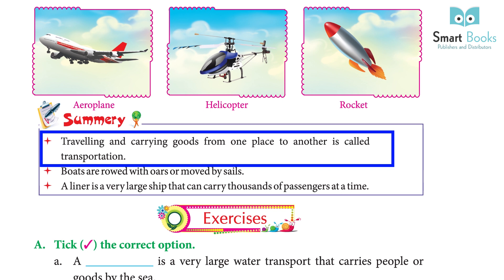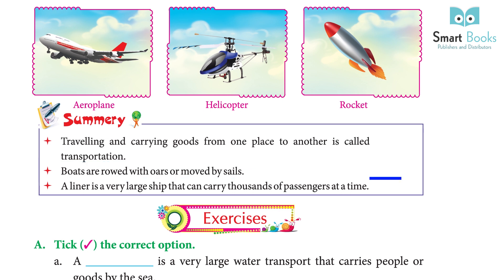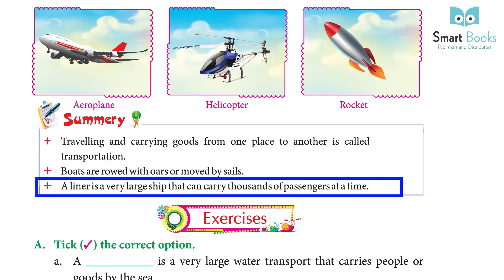Summary: Traveling and carrying goods from one place to another is called transportation. Boats are rowed with oars or moved by sails. A liner is a very large ship that can carry thousands of passengers at a time.